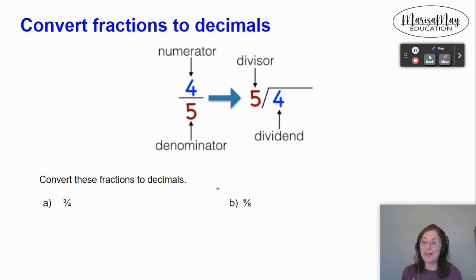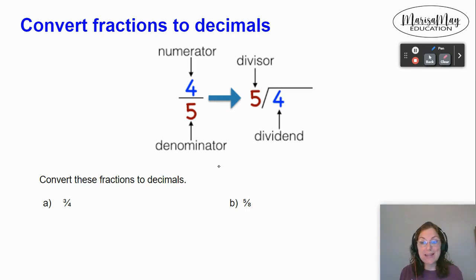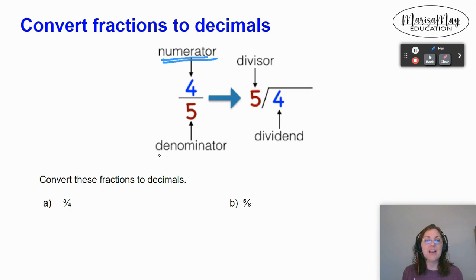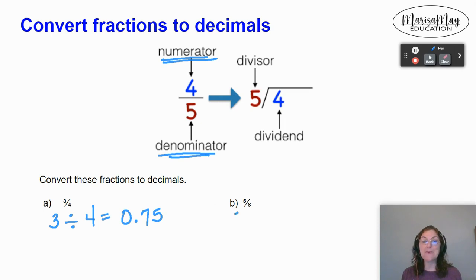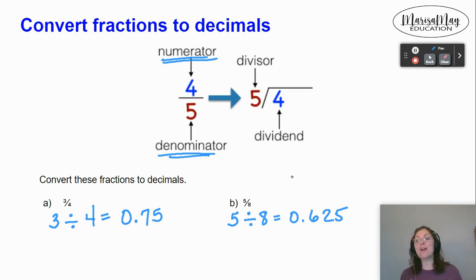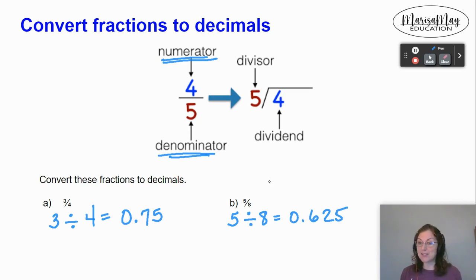Let's go the other way — converting a fraction to a decimal. This one I really like because it's super easy, but make sure you have your calculator. You're going to take your numerator (the top number) and divide by your denominator. For A, type 3 divided by 4 in your calculator and it will tell you 0.75. Do the same for 5 eighths: 5 divided by 8 gives you 0.625. Any four-function scientific calculator will work for these calculations.